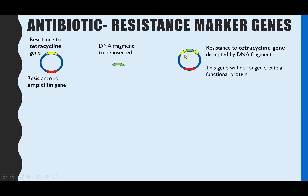That tetracycline gene is now disrupted, so it's no longer going to be able to create the protein which makes the bacteria resistant to tetracycline. In other words, any bacteria that contains this recombinant plasmid will not be resistant to tetracycline. It will still be resistant to ampicillin though, because that gene is completely unaltered.